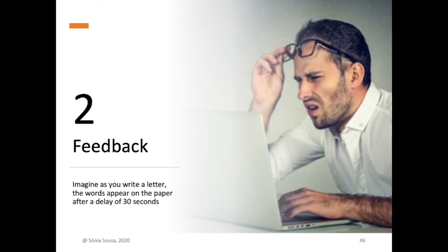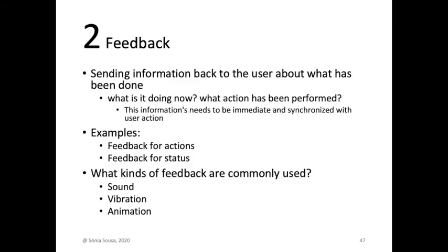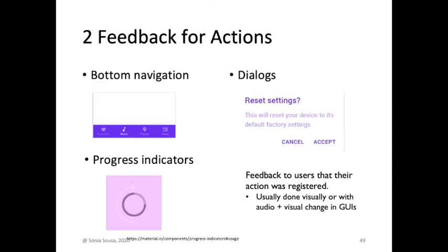For example, imagine you are writing in Word and the letters don't appear right away — that is very confusing. You don't know if you are making a mistake or if the computer is lagging. You need feedback for actions and feedback for status. You can provide feedback in different ways: vibration, sounds, color signals — green or red — tactile feedback, and animation. Use predefined patterns to provide feedback. A good example is a link: if you don't have the underline and the blue color, how do you know it is a link?